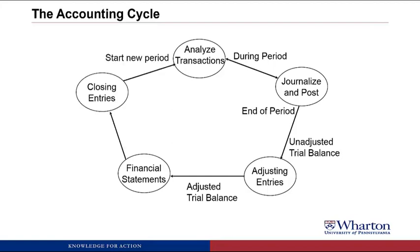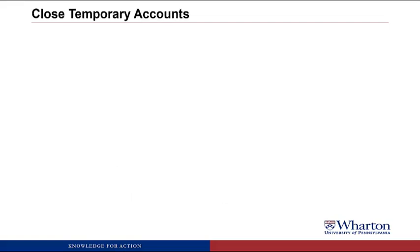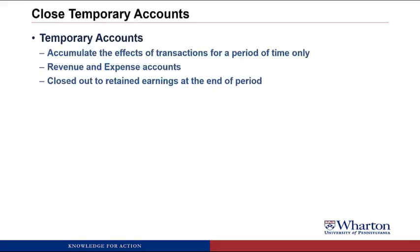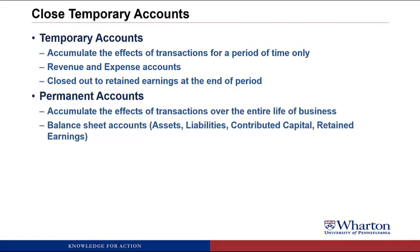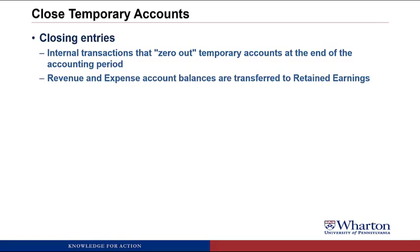When we finish the financial statements, we're ready for the last stop on the accounting cycle: closing entries. This allows us to get ready to start a new period so that we can do the cycle over and over again for the whole life of the company. Closing entries involve closing temporary accounts — accounts that accumulate the effects of transactions only for a certain period of time, such as a fiscal quarter or fiscal year. These would be the revenue and expense accounts, which get closed out to retained earnings at the end of the period. Permanent accounts are the balance sheet accounts — assets, liabilities, contributed capital, and retained earnings — which accumulate transaction effects over the life of the business.